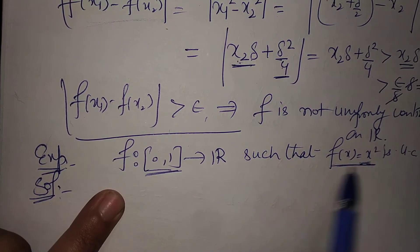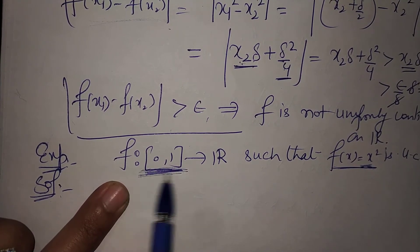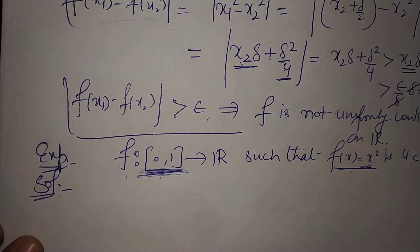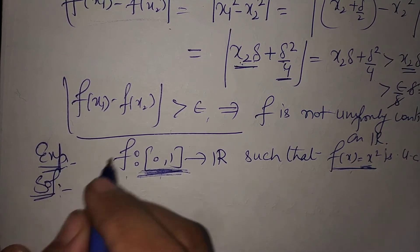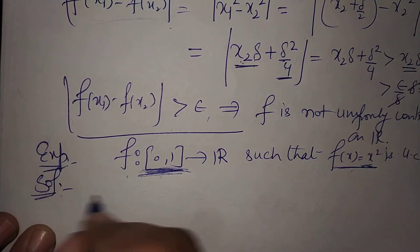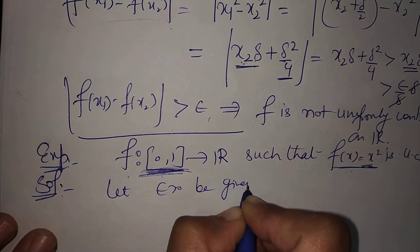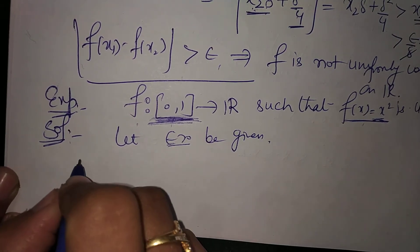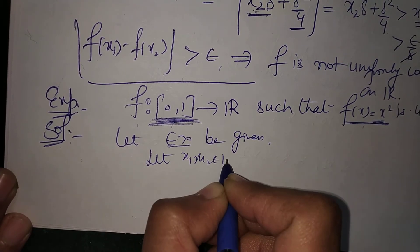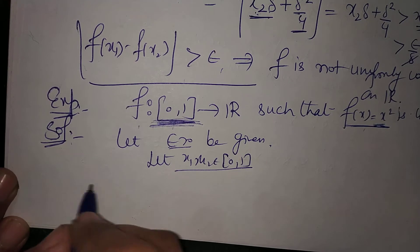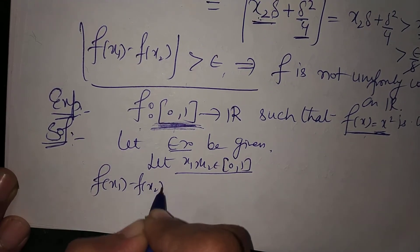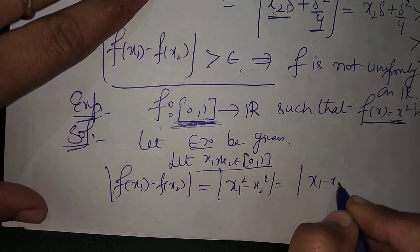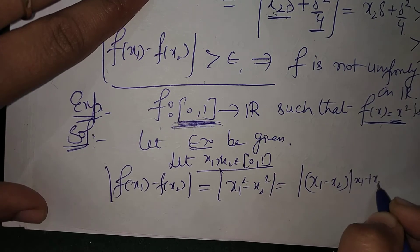This function is continuous and the domain is a closed bounded interval, so by that theorem it is uniformly continuous. However, we will prove it directly. Let epsilon greater than zero be given. Let x1 and x2 be two points in the closed interval [0,1]. Now, |f(x1) - f(x2)| equals |x1² - x2²|, which equals |x1 - x2| · |x1 + x2|.